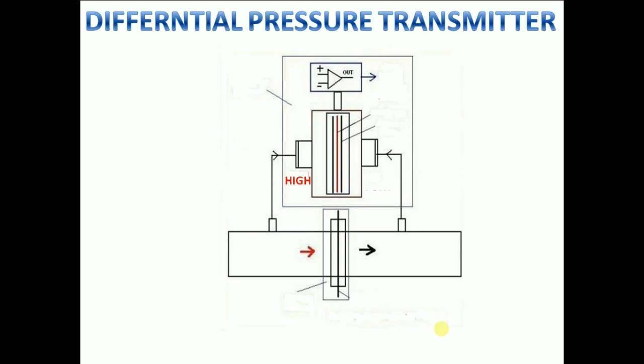Differential pressure flow meters have a primary and a secondary element. Generally speaking, the primary element is designed to produce a difference in pressure as the flow increases.